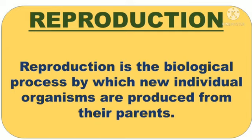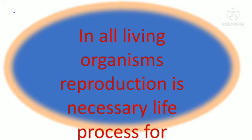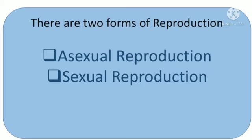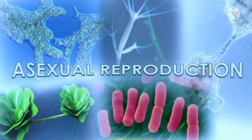Reproduction is the biological process by which new individual organisms are produced from their parents. In all living organisms, reproduction is a necessary life process for continuation of life. There are two forms of reproduction: asexual reproduction and sexual reproduction.